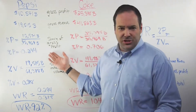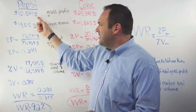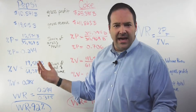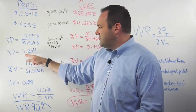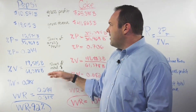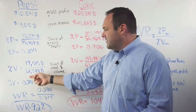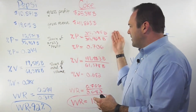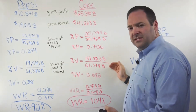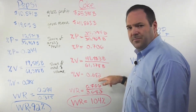This is how we determine your share of gross profit. You take that first number from Pepsi — the $10,571,000,000 — over the combined gross profit for the category, and you get a percentage of 0.294. You do the same thing for the share of total dollar volume in gross revenue: you take the $19B from Pepsi over the total $61B for the category. And for Coke, you take the $25B over the $35B and the $41B over the $61B, and you get 0.706 and 0.682.